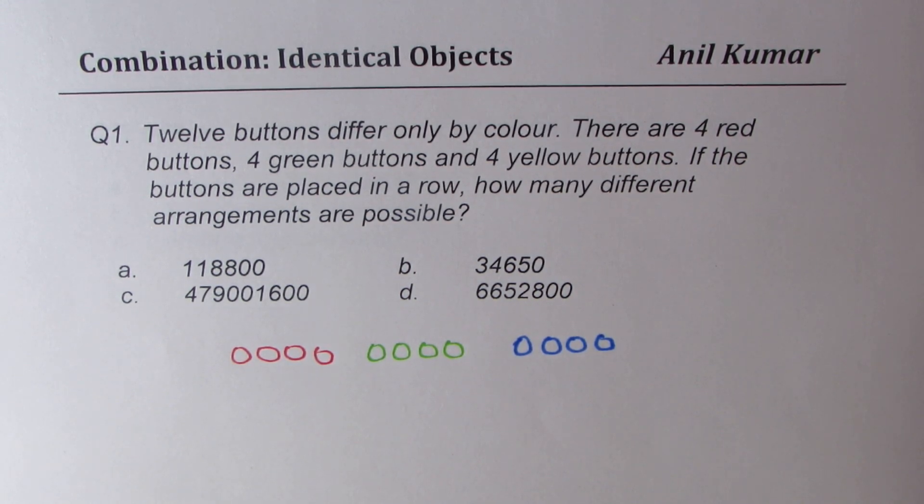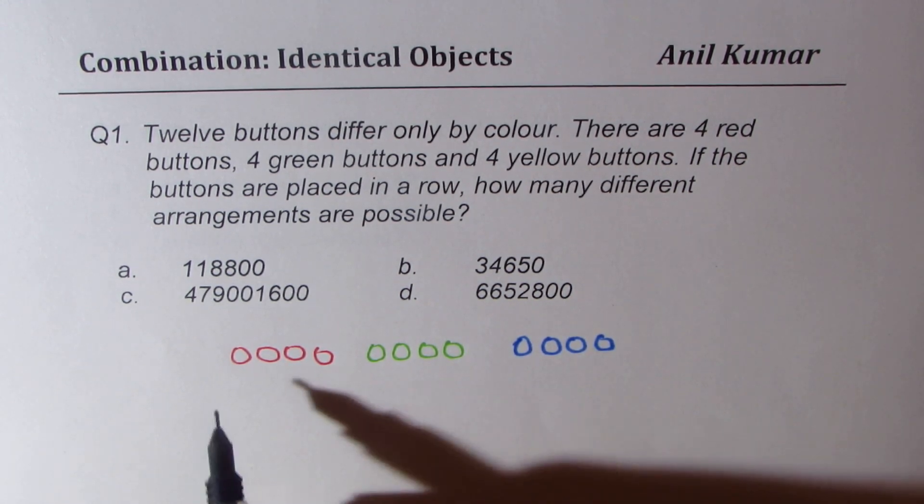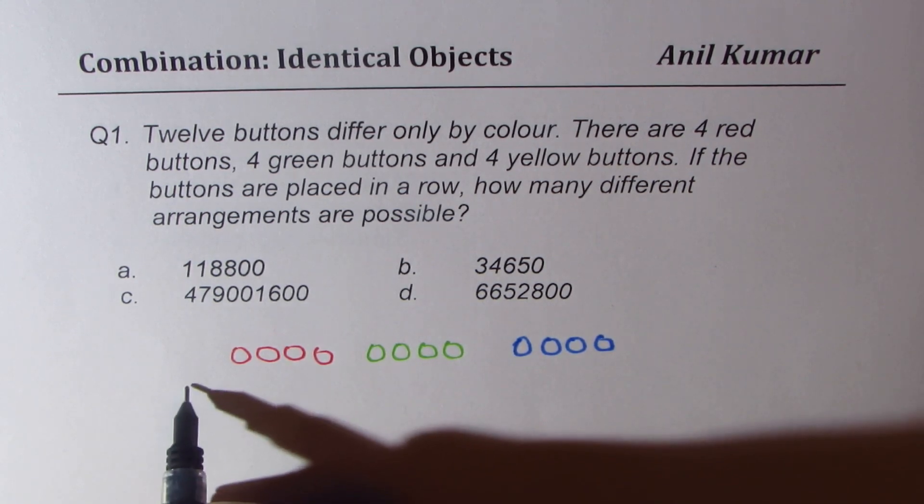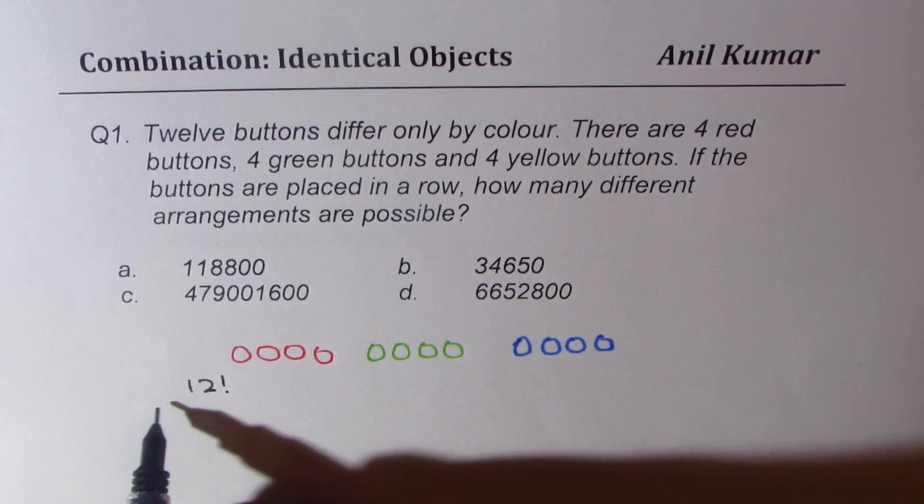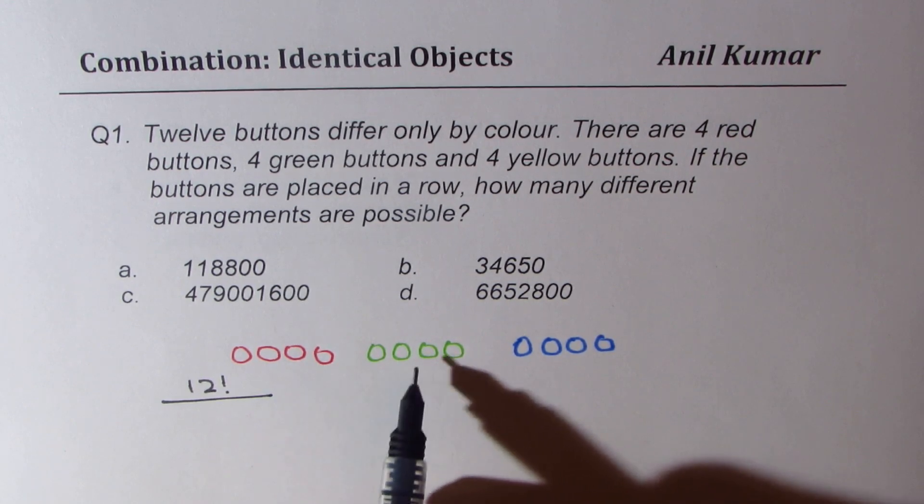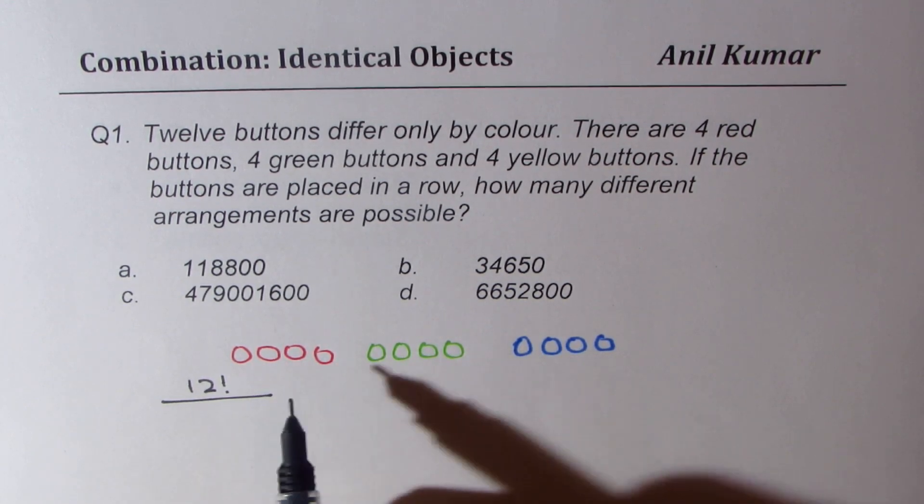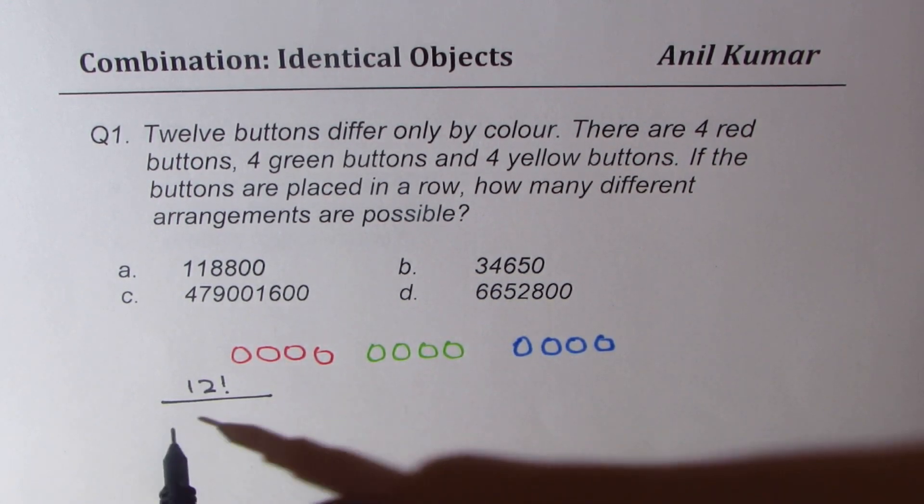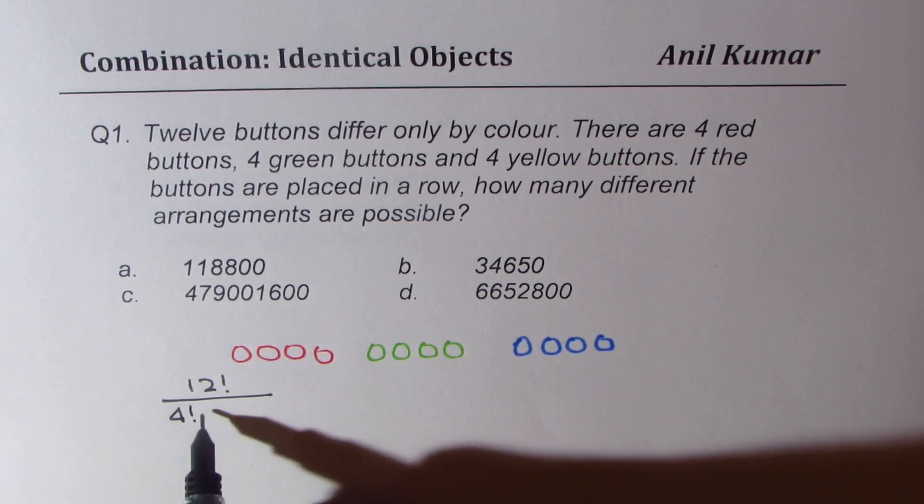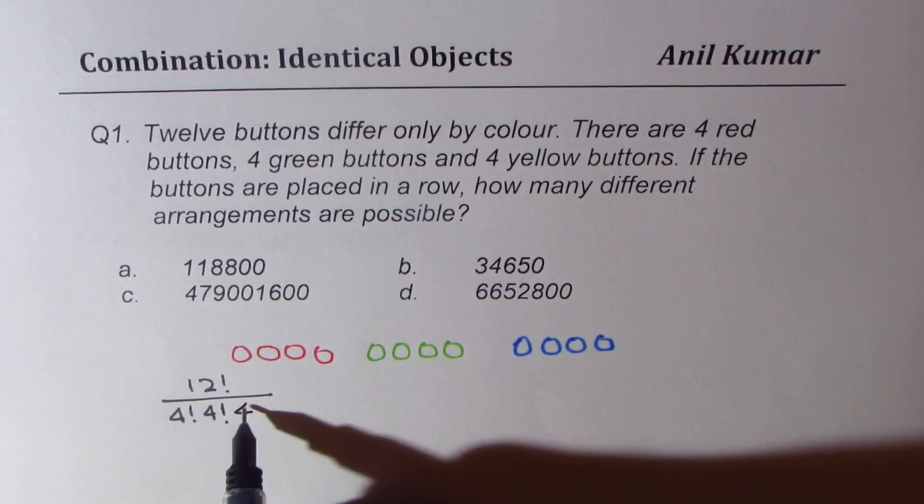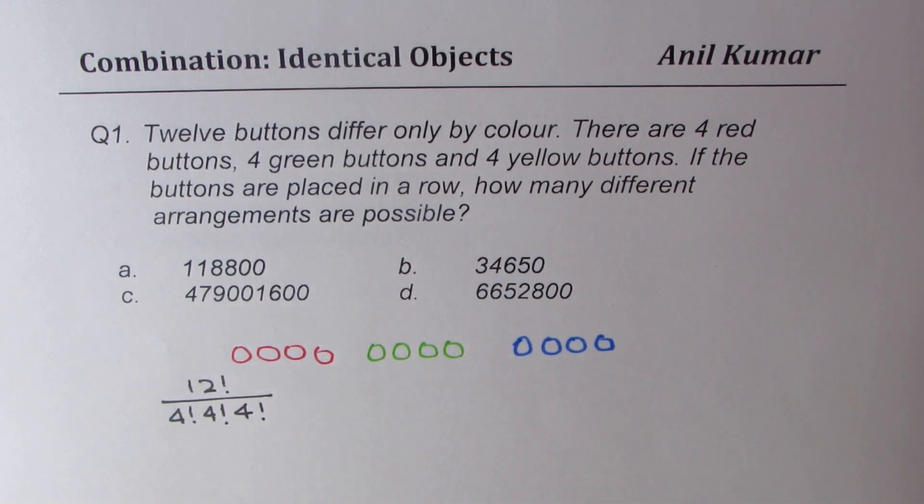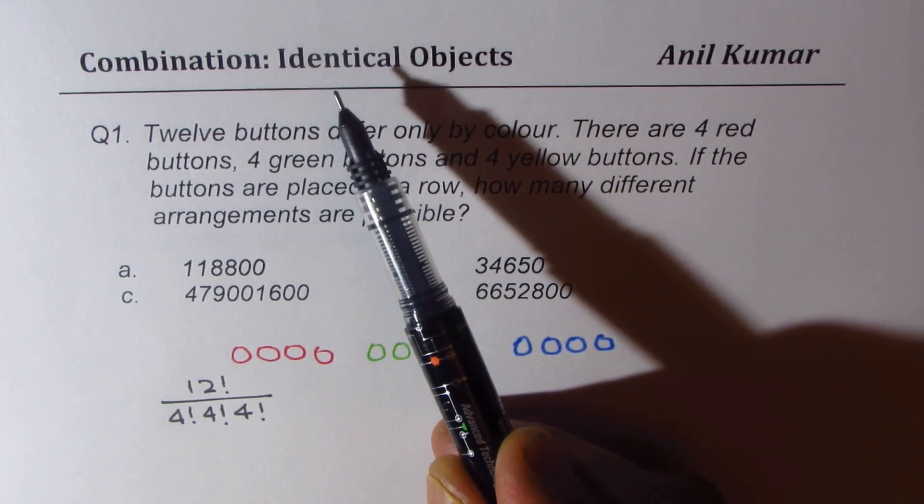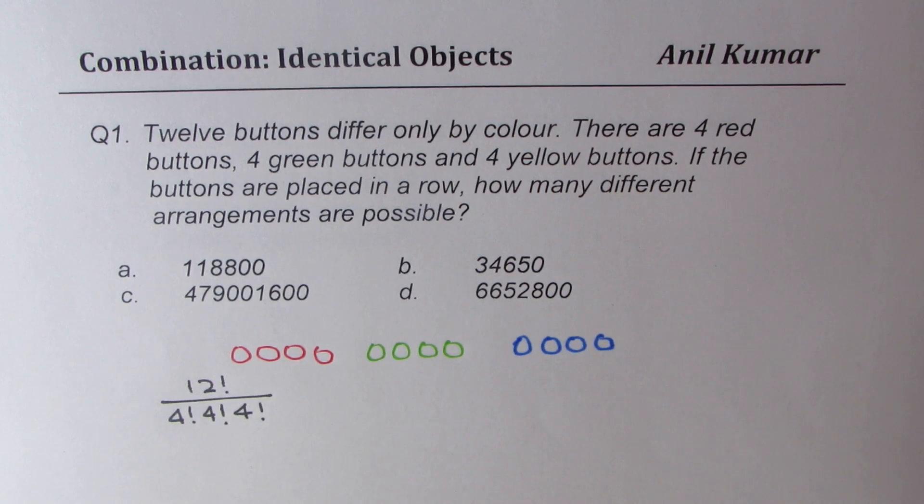So the clear answer here is that there are 12 in all, so 12 factorial, divided by four of each kind are same. So those combinations will be similar. So we need to divide by 4 factorial for red, 4 factorial for green, and 4 factorial for yellow. So that becomes our answer. Now this is one approach which we have learned for identical objects.